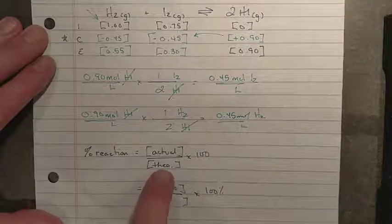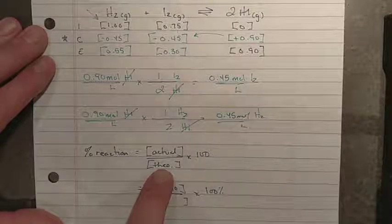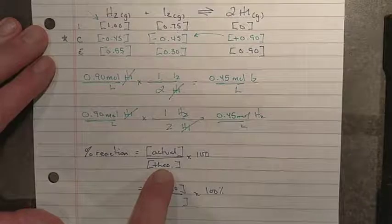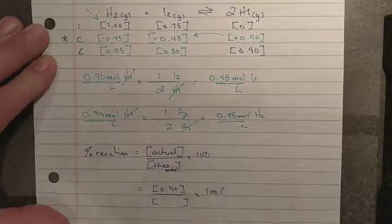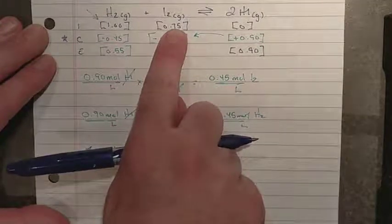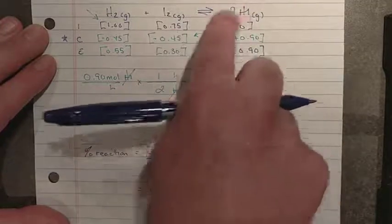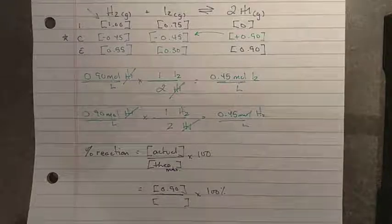Well, the theoretical amount assumes quantitative state. What is the maximum amount that you can possibly get? So I like to sometimes call this a theoretical maximum. If all 0.75 moles of iodine were consumed in a 2 to 1 ratio, how much hydrogen iodine could I possibly produce if this reaction were quantitative?